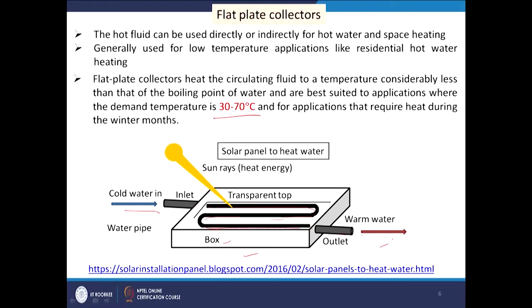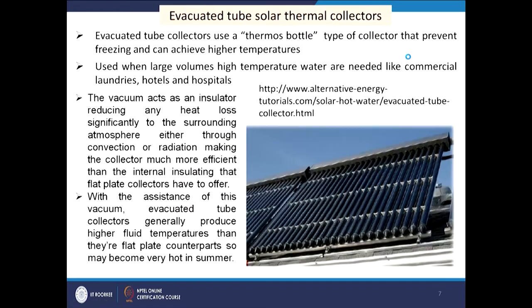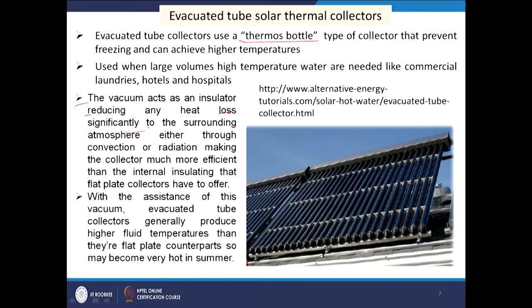Flat plate collectors are used mainly in home applications like residential hot water heating. Evacuated tube solar thermal collectors came later and are thermos-bottle-type arrangements. A vacuum is created inside so that the vacuum acts as an insulator, reducing heat loss to the surrounding atmosphere through both convection and radiation, making the collector much more efficient than flat plate collectors. The outlet temperature is therefore higher than that of a flat plate collector.